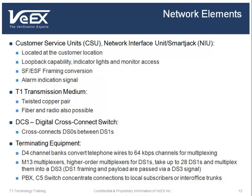Here are the T1 network elements. In North America, CSUs, or customer service units, are owned by the end user. They provide loopback capability, indicator lights, monitor jacks, and split access for troubleshooting and installation debugging. Network interface units, or NIUs, are owned by the carrier but located on the customer's premises, and they provide the demarcation points. Often also called the smart jack, the NIU provides signal loopback, sends alarm indication signals, or sends an idle signal when the customer's signal is unplugged. It also provides performance monitoring information. Smart jacks can also do SF and ESF framing conversions.